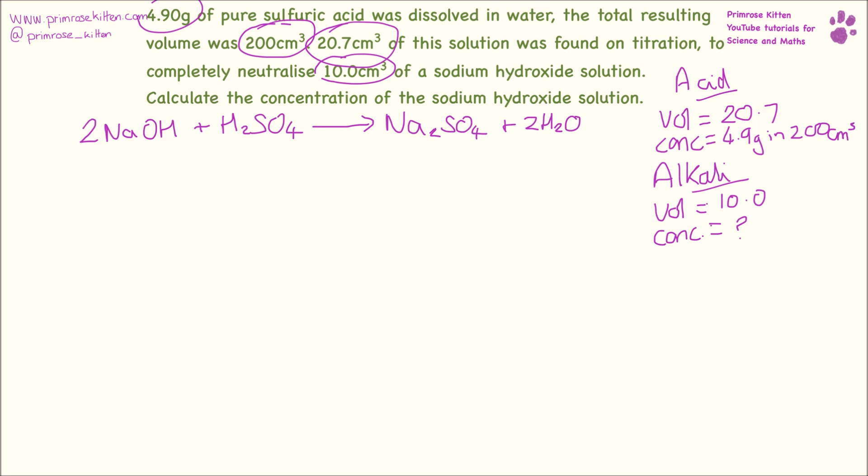This is where the first tricky bit comes in because we need to work out our concentration of sulfuric acid. First thing we need to do is work out the MR of sulfuric acid. We have 2 hydrogens which weigh 1, plus sulfur which weighs 32, plus 4 oxygens which weigh 16, giving us a total MR of 98 for sulfuric acid.